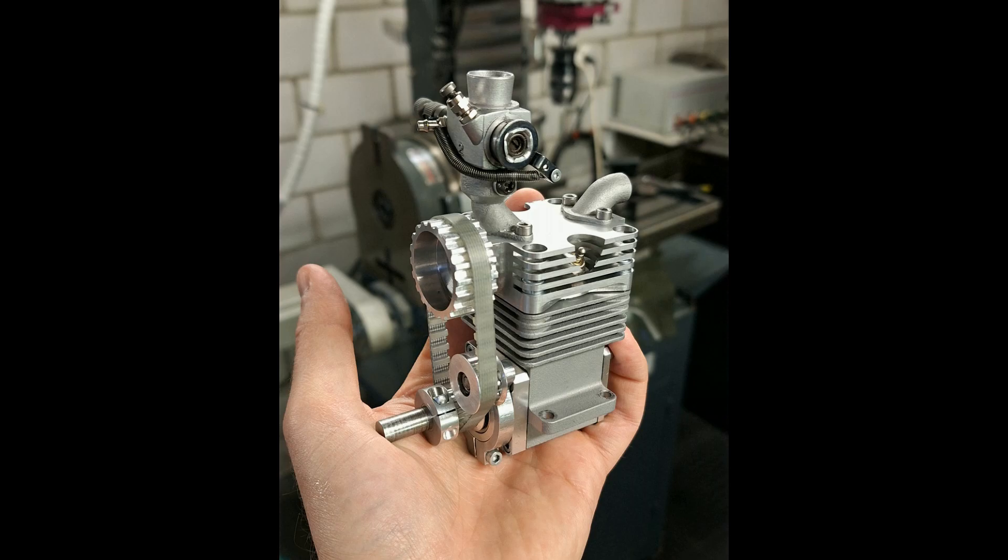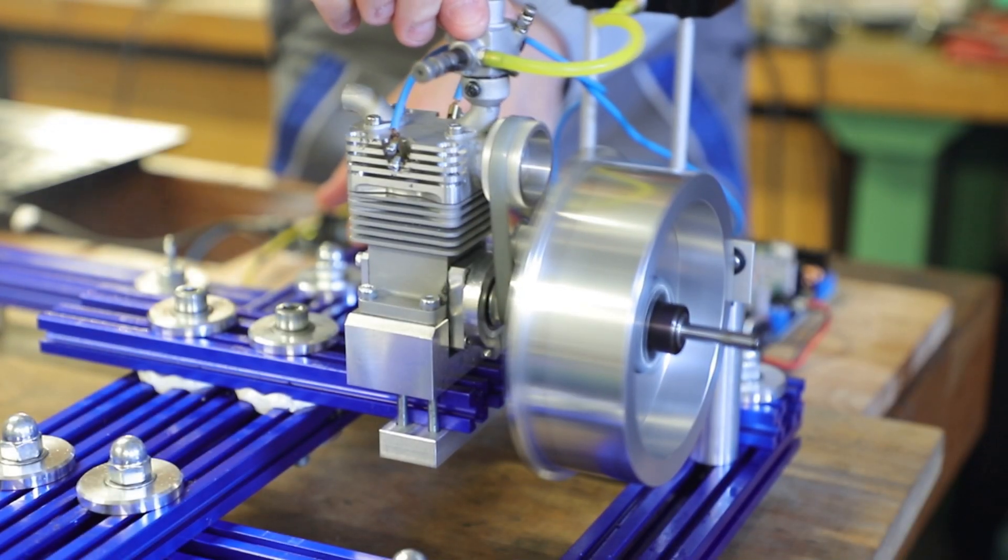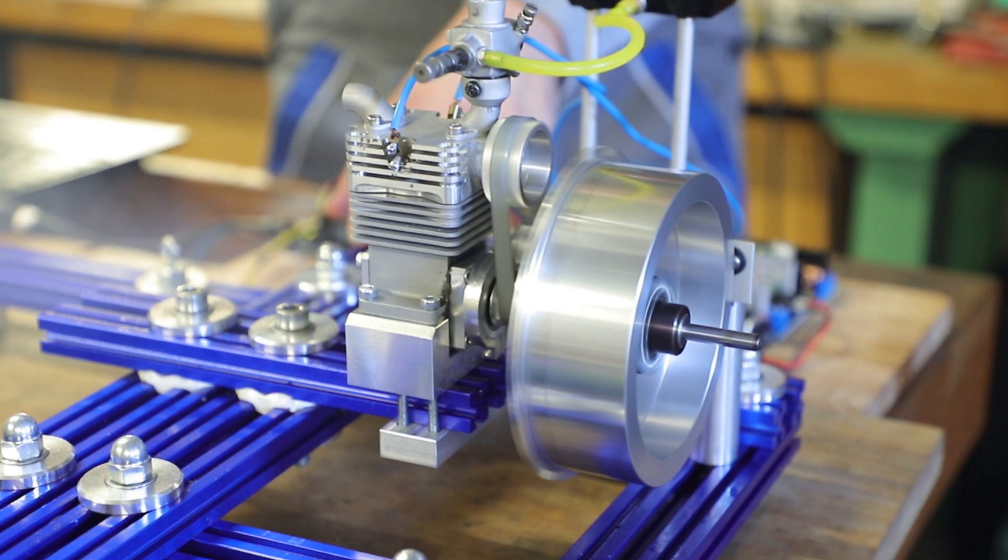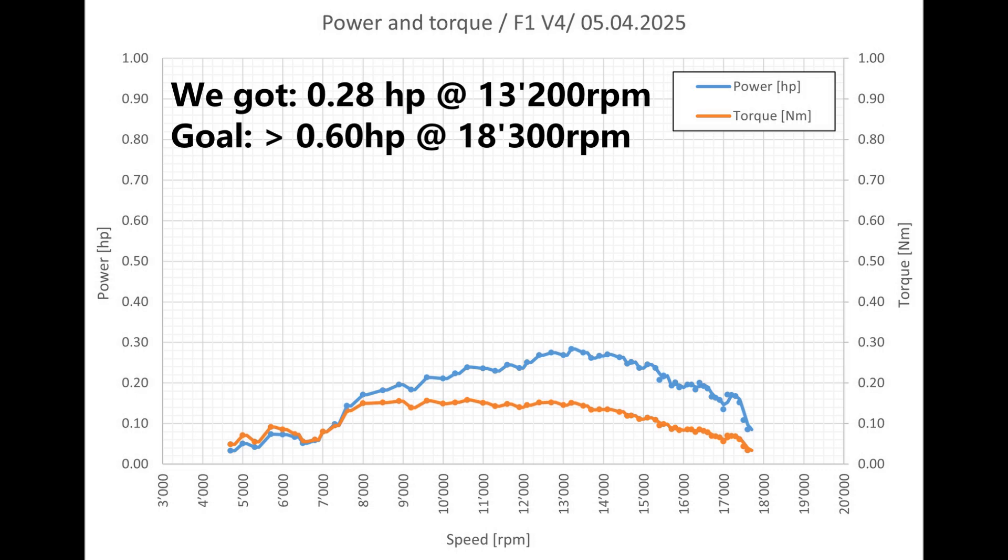When the engine was finally finished, it was time to measure its performance. We had only achieved 0.28 horsepower. The goal was to achieve more than 0.6 horsepower and thus have more power than the first version.